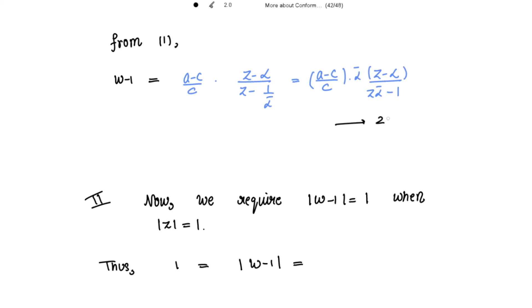We require |w - 1| = 1 when |z| = 1, so 1 = |w - 1|. Using |z| = 1, we can write zz̄ = 1. Taking the modulus of both sides of equation 2, this becomes |[(a - c)/c] · ᾱ| · |z - α| / |zᾱ - 1|.